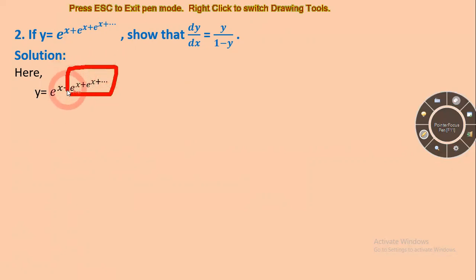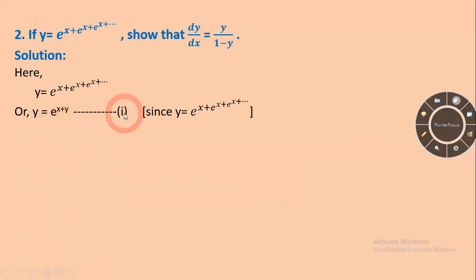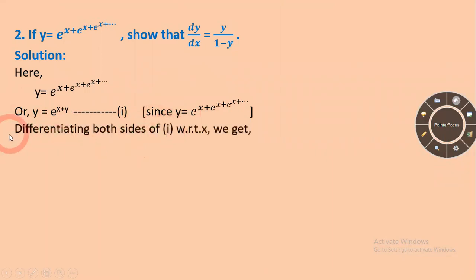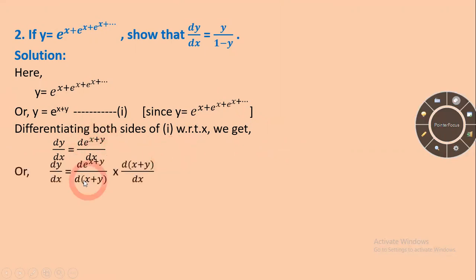So we have y equal to e^(x plus y). Differentiating both sides with respect to x, we get dy/dx equal to d(e^(x plus y))/dx. Applying the chain rule for e^(x plus y) with respect to x, we differentiate the exponent (x plus y) with respect to x.